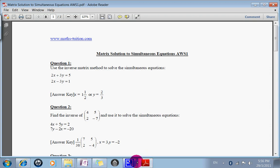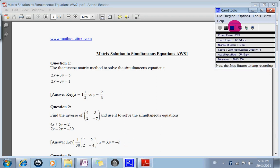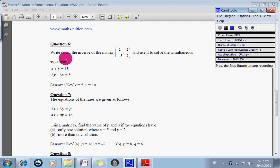Let's look at our second example. Write down the inverse of the matrix 2, 2, negative 3, 2 and use it to solve the simultaneous equation. So the order of the question has changed. We're supposed to find the inverse of the matrix 2, 2, negative 3, 2.